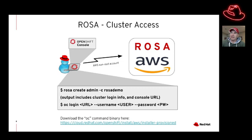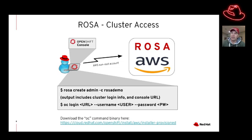Once you have that information, you can log into the cluster from the command line by typing OC login with the URL, username, and password from the output. Separately, you can go to the console web UI at the provided URL and use those same credentials to log in. Before using the OC command, you'll need to download that binary from cloud.redhat.com.